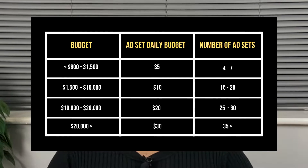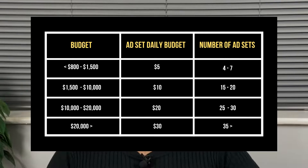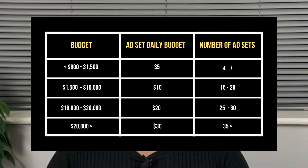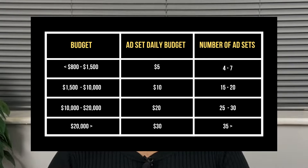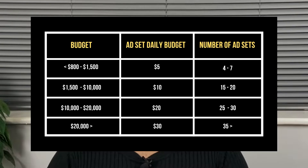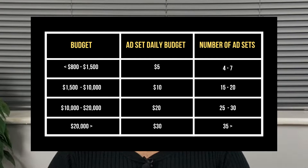Before you can do this audience testing, you first need to know what budget you'll be working with. As a guideline: if you have a budget between $800 to $1,500, use a daily ad set budget of $5 with around 4 to 7 ad sets. If it's $1,500 to $10,000, use $10 per ad set with at least 15 to 20 ad sets. If it's $10,000 to $20,000, use $15 to $20 per ad set with at least 25 to 30 ad sets. If your budget is above $20,000, use $25 to $30 daily and go with whatever Facebook's ad limit allows.